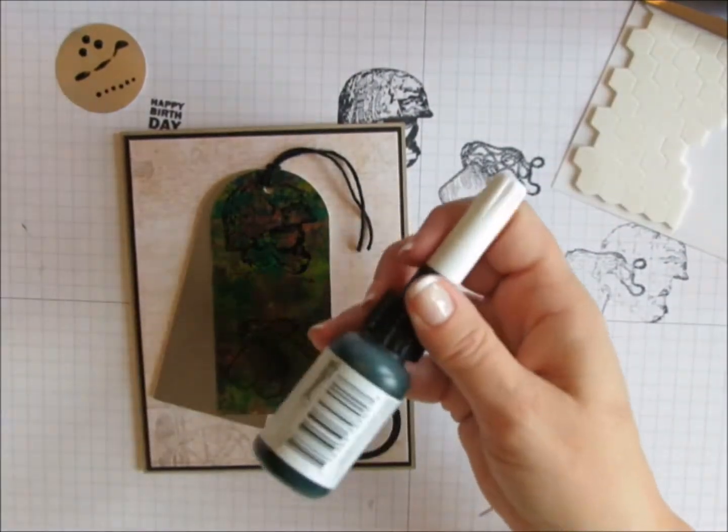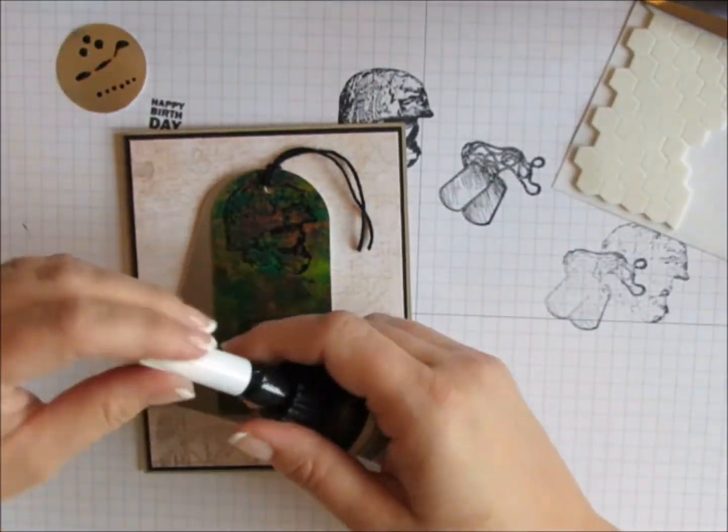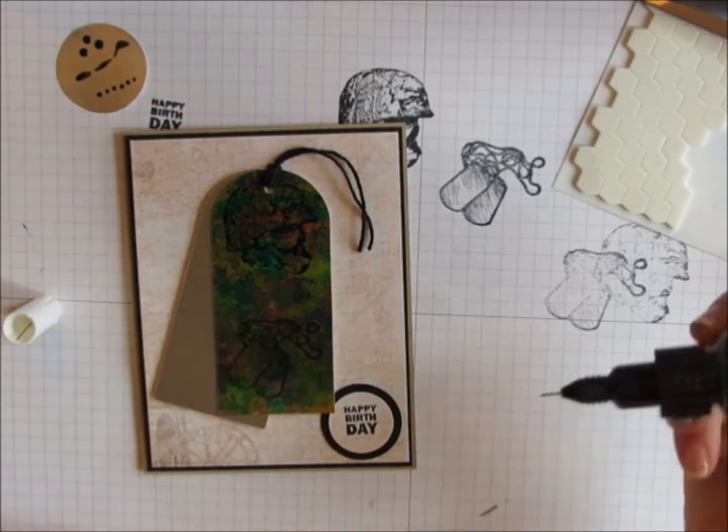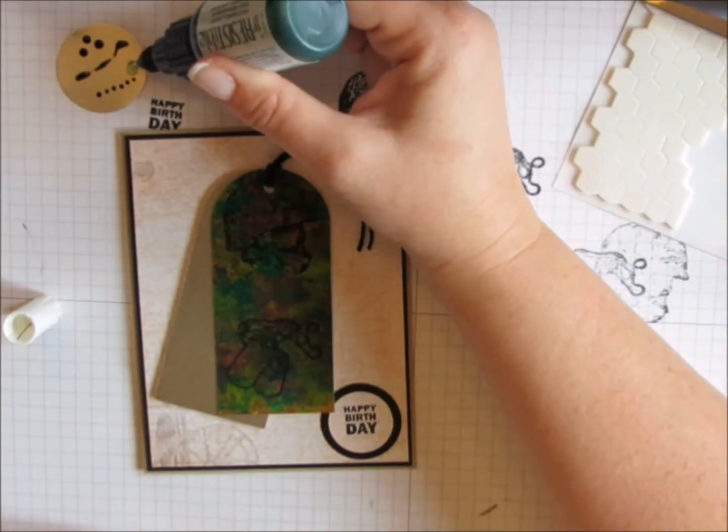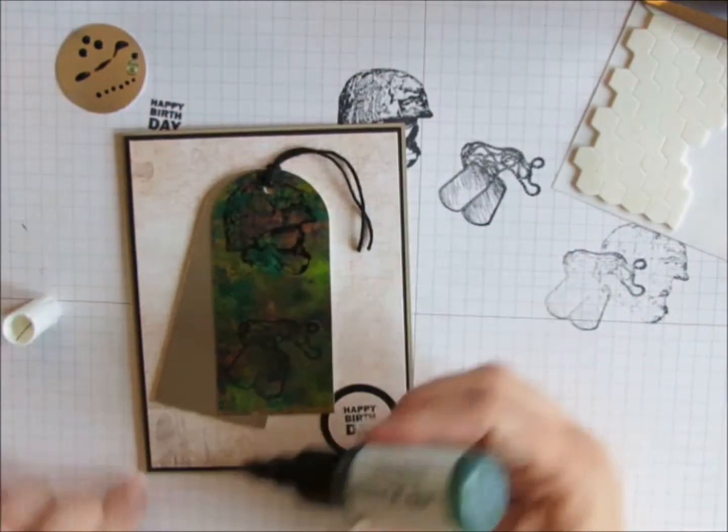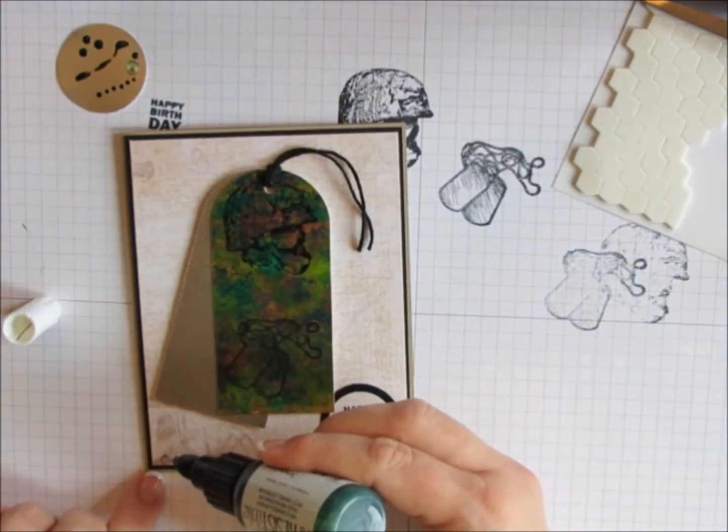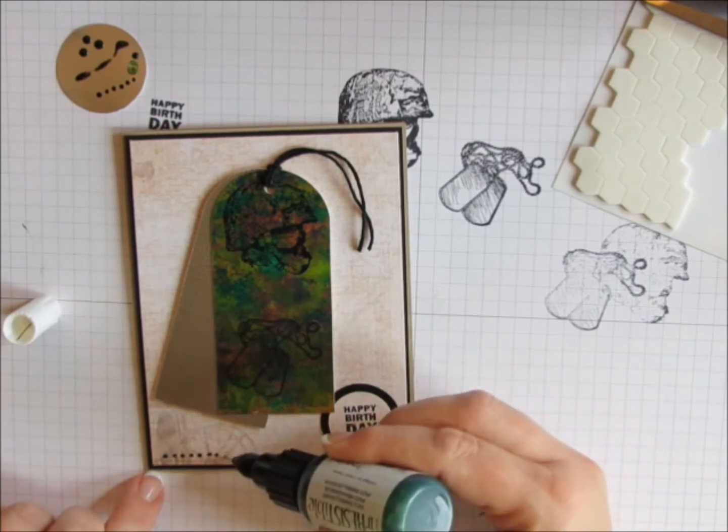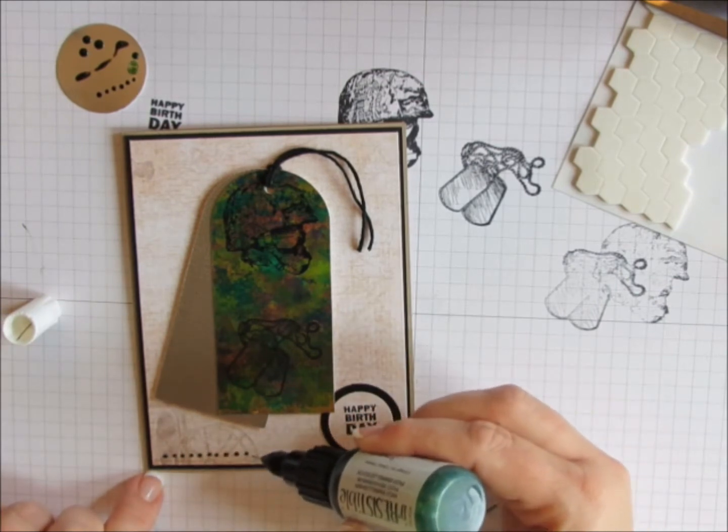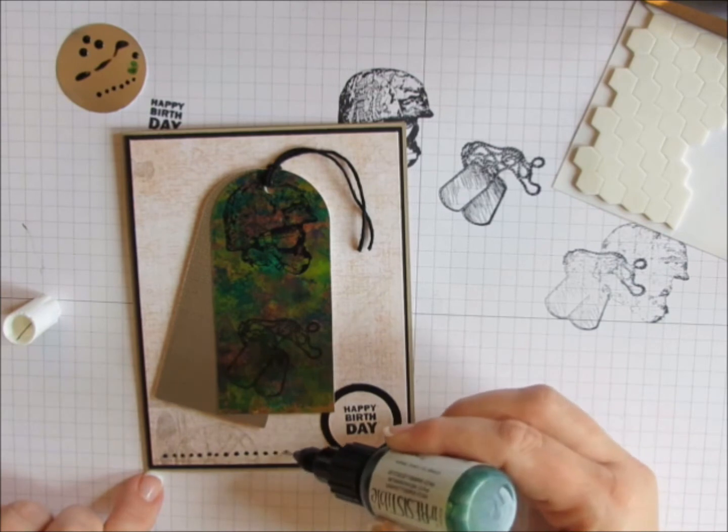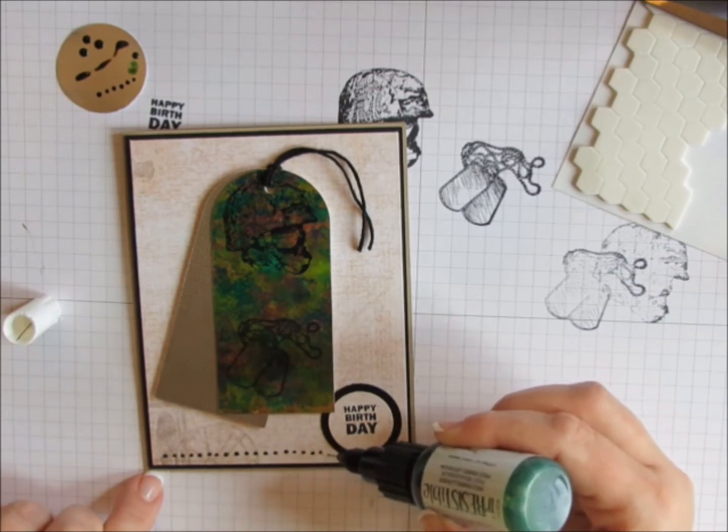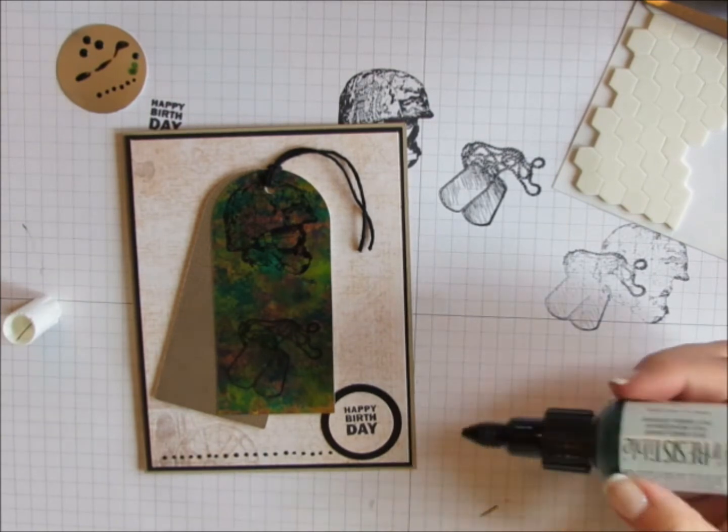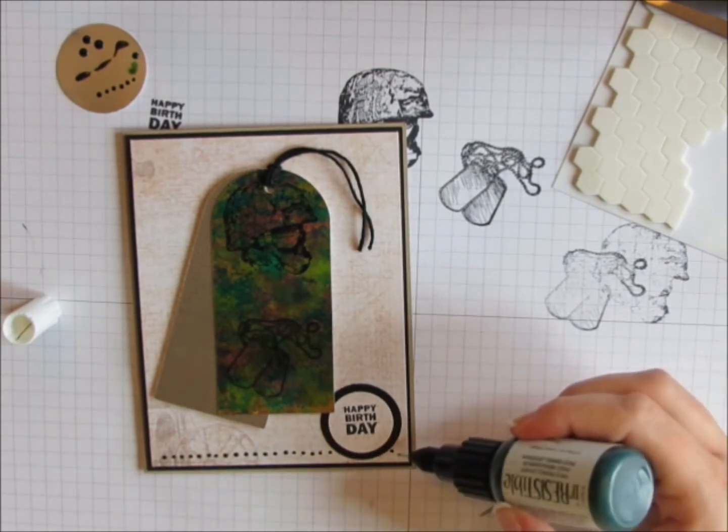Imagine Craft sent me a box of inky goodies and one of the things that they sent me is this Pico embellisher. It's little bits of ink that have some dimension to it. So I just practice it, make sure there's no air bubbles in the tip on that little piece of scrap paper. And then I'm just going to add these little dots all along the bottom of my card. Set it aside to dry and when it dries it is a little bit shiny and just a little bit of dimension.